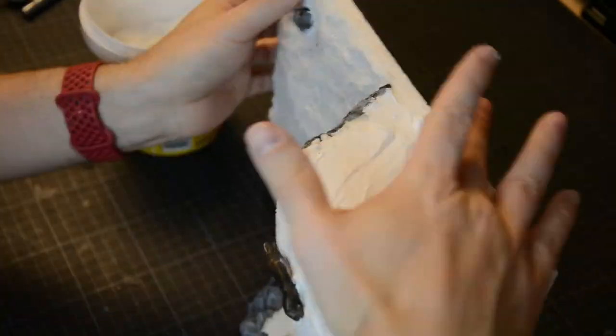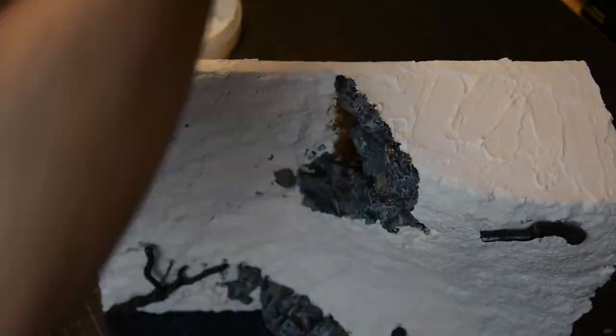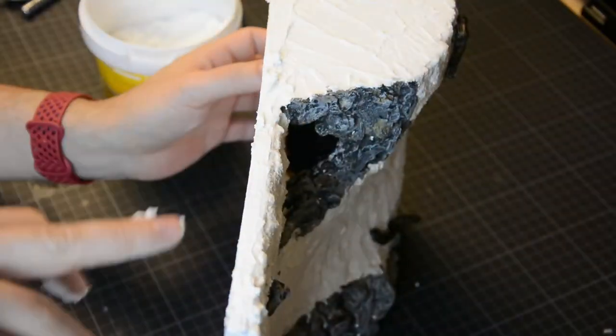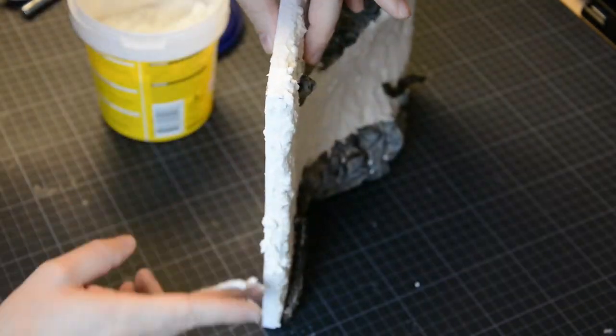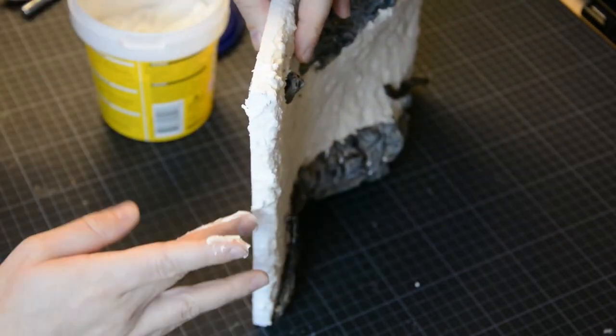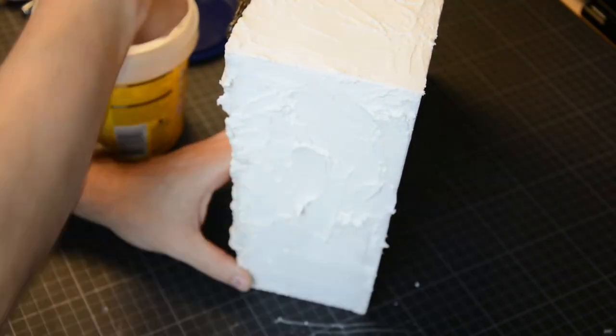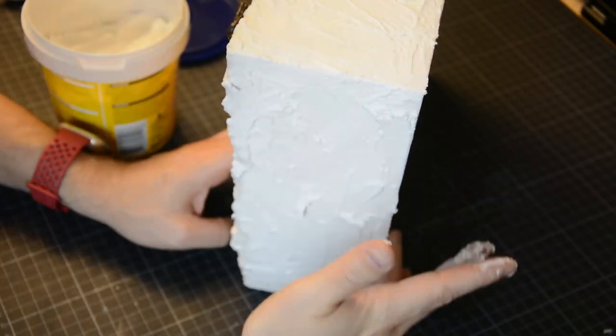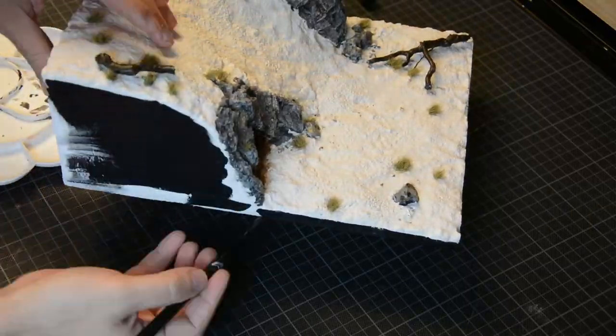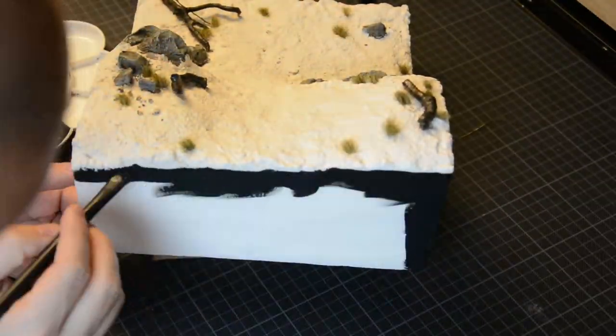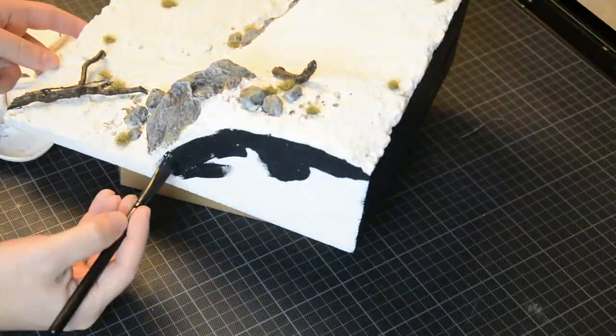I wanted to have smooth black edges on the diorama, so I covered them in wall filler or spackle. I've never done this before, so I wasn't sure if it was the best solution. Alternatively, I was thinking of covering them in cardboard, which might have been better. After the wall filler had dried, I took it outside and sanded it. And then I painted the edges black.